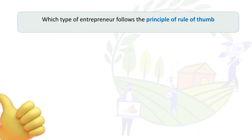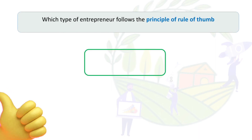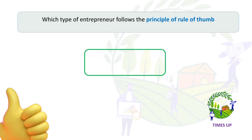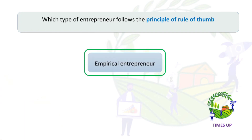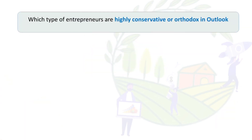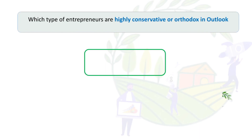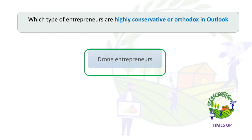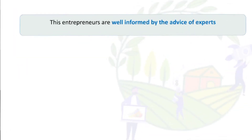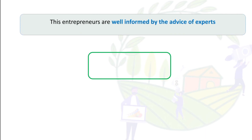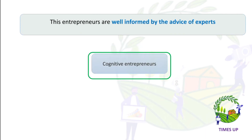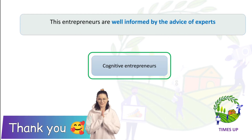Which type of entrepreneur follows the principle of rule of thumb? The answer is empirical entrepreneur. Which type of entrepreneurs are highly conservative or orthodox in outlook? The answer is strong entrepreneurs. Entrepreneurs who are well informed by the advice of experts are called cognitive entrepreneurs.